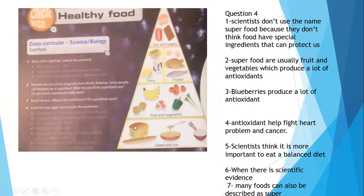Here we have the answers of the questions. Do scientists use the name superfood? Why or why not? Scientists don't use the name superfood because they don't think food have special ingredients that can protect us. Number two, what type of food do people usually call superfood? Superfoods are usually fruit and vegetables which produce a lot of antioxidant.